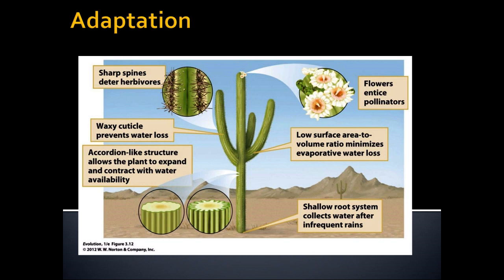Saguaro cactus has many different adaptations — not just leaves modified into spines — that make it thrive in the deserts of the American Southwest. Those are adaptations. But if we took this cactus and moved it to a tropical area, suddenly it would not do well at all — it would be competing with organisms adapted to that environment. So adaptations are dependent on the environment.